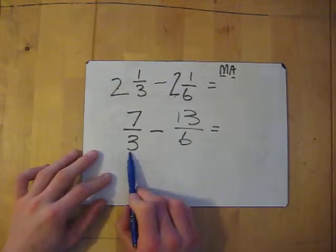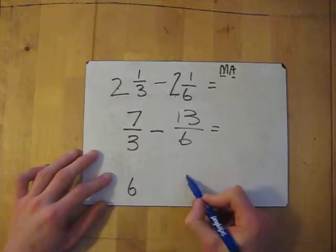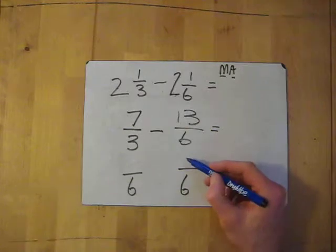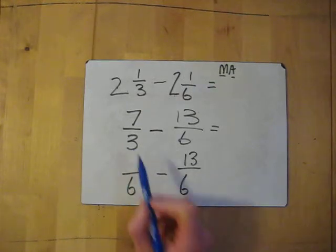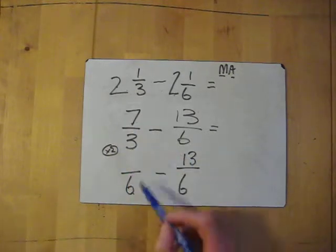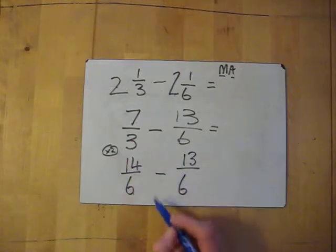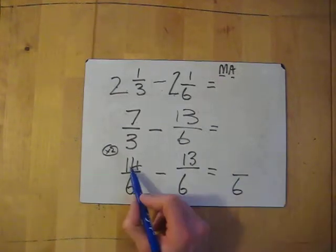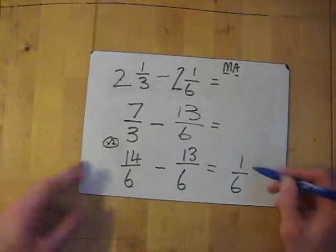Now we need to find a common multiple between three and six, and this one's fairly straightforward — it is six. So we're going to convert these two improper fractions into sixths. This one is already in sixths so we just write it down. This one however: what do you do to three to get to six? You times by two. So we have to times the top by two as well — seven times two gives me fourteen. Then subtract the top numbers and keep the bottom the same: fourteen take away thirteen gives me one. So my answer is one sixth.